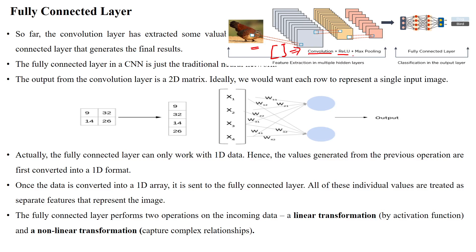After generating the feature map using the convolution process, we apply max pooling to downsample the image and decrease the number of parameters to process during training. This generated feature map, after downsampling through many hidden layers, gives us output in matrix format. We then use a fully connected layer to generate the classification output.